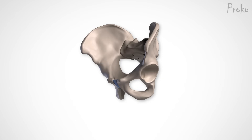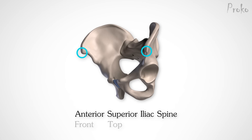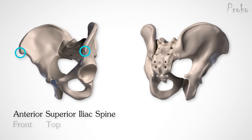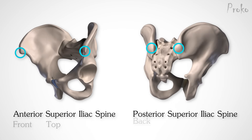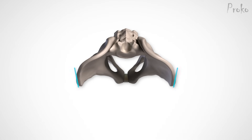The iliac crest starts in the front at the ASIS — that's the anterior superior iliac spine — and it ends in the back at the PSIS, or posterior superior iliac spine. Don't miss this. I mention these two landmarks a lot, and I use them a lot when drawing the figure. From the top view, the crest curves outward from the ASIS for a short distance to the tubercle, then curves back for a longer distance, and then almost straight backward for a short distance to the PSIS.